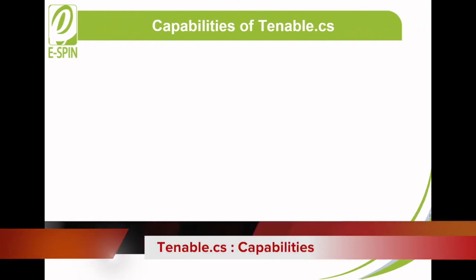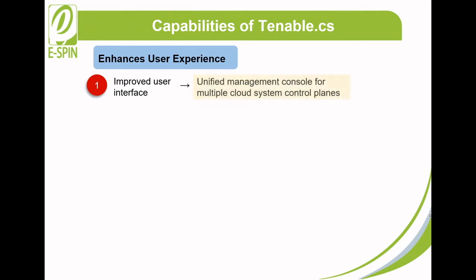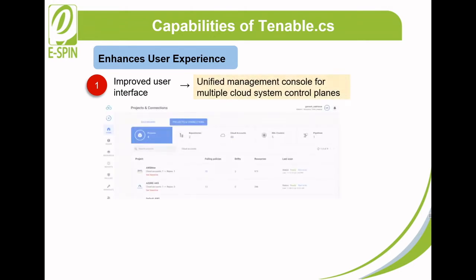The capabilities of Tenable CS include enhanced user experience. The improved user interface in Tenable CS provides a unified management console for multiple cloud system control planes. This allows users to easily digest information on policy non-compliance, misconfigurations, risk-affecting code repositories, cloud accounts, Kubernetes clusters, as well as CI/CD and GitOps pipelines.